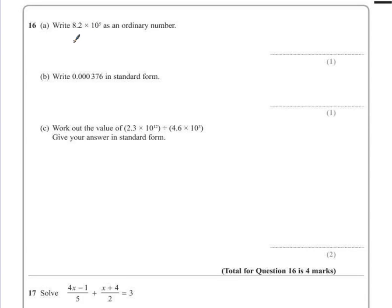So we have 8.2 times 10 to the power of 5. Now as a general rule I would then use that to say right I'm going to put 5 zeros on the end just in case.